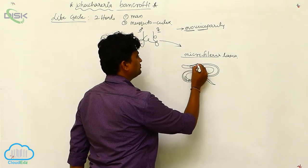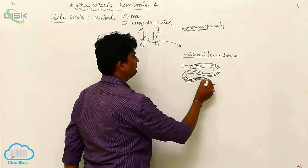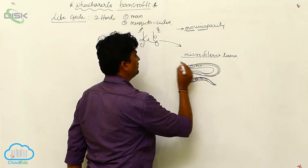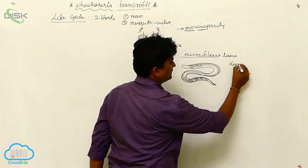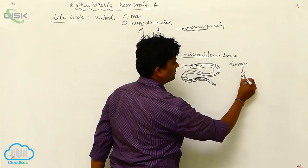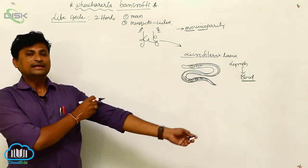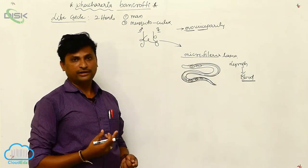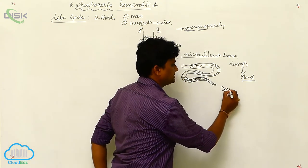The outermost coating will be in the peripheral area. It is used for protection and continuation of life. These microfilaria are present in the lymph, which is related to the blood. They show a special type of periodicity — nocturnal periodicity — meaning they are active at nighttime.